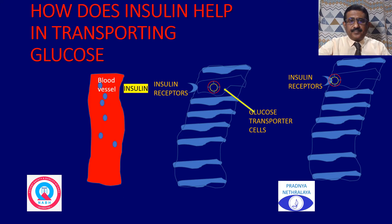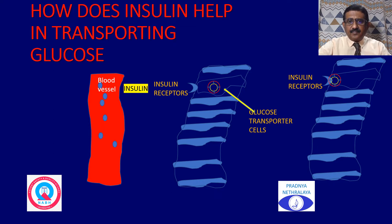There are certain cells called insulin receptors in the muscle and fat tissue. When insulin comes and attaches to the insulin receptors, it activates glucose transport cells in the muscle and fat cells. When the glucose transport cell attaches to the insulin receptors, this helps in transporting the glucose from the blood vessel into the cell.